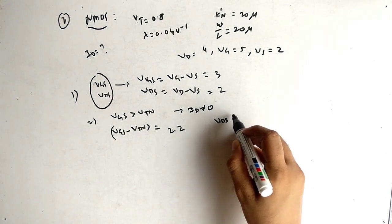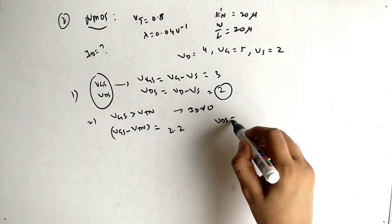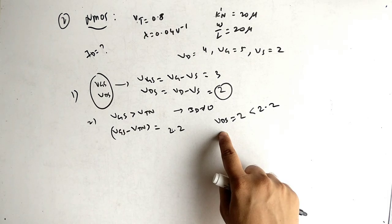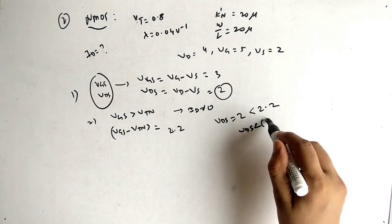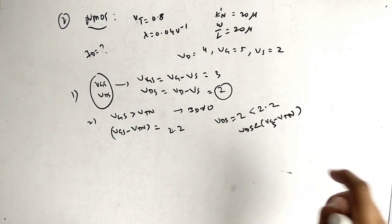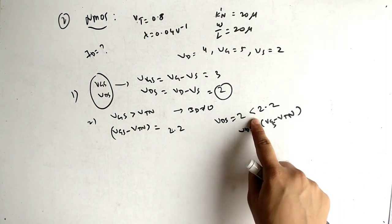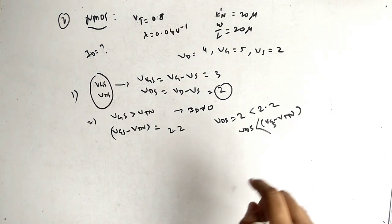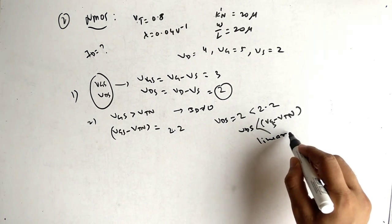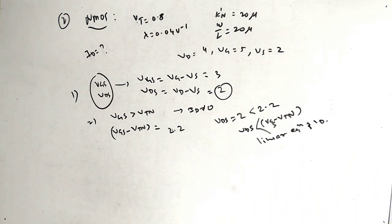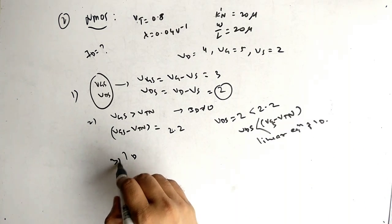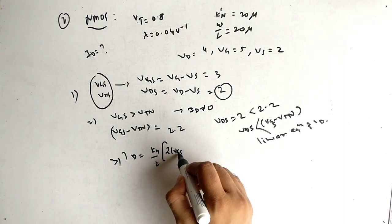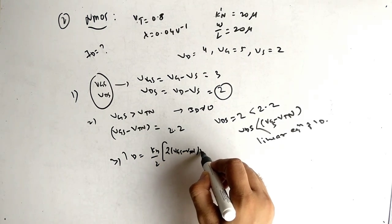Compare VDS and VGS − VTN: VDS = 2 V is less than 2.2 V. Since VDS < VGS − VTN, the device is in the linear region. Use the linear equation for ID.